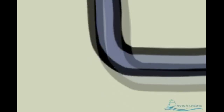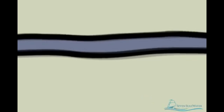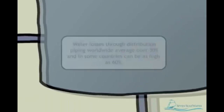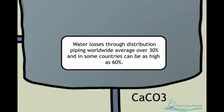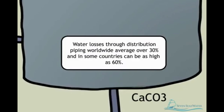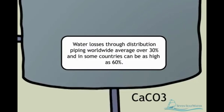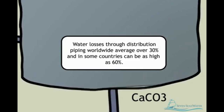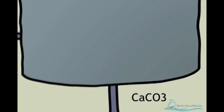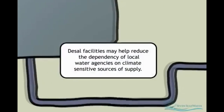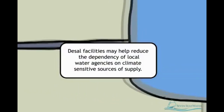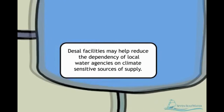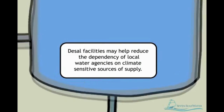The potable water is further treated by adding calcium carbonate to improve the taste and bring the pH to the neutral range. Chlorine is also injected to provide disinfection properties as the water travels from the reverse osmosis plant through the distribution pipes to homes and businesses.